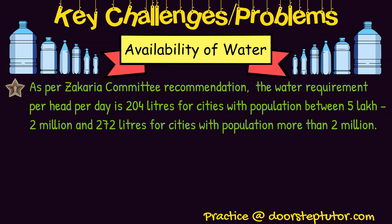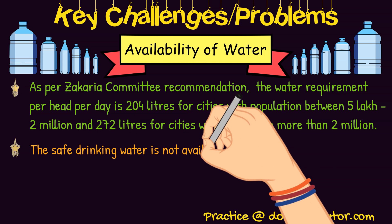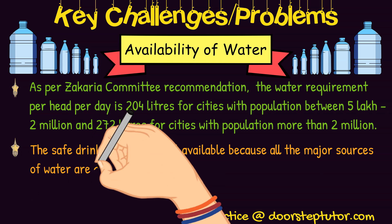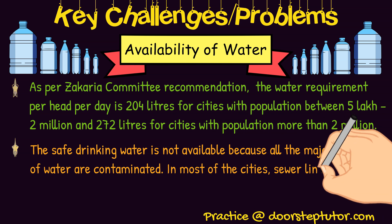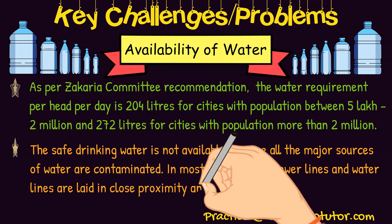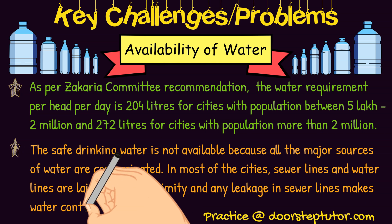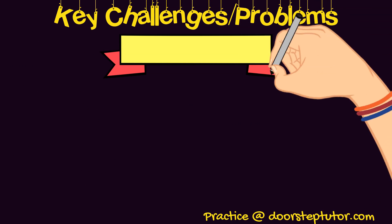India is currently in a water-stressed condition. Safe drinking water is not available because major water sources are already contaminated — take the example of the Ganga, Yamuna, and nearby lakes and rivers. In most cities, sewer lines and water lines are laid in close proximity, and when leakage occurs in either line, the main water line gets contaminated and that same water is used for drinking purposes.